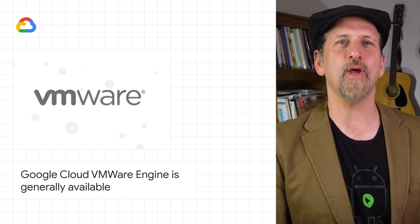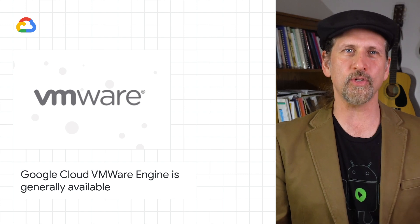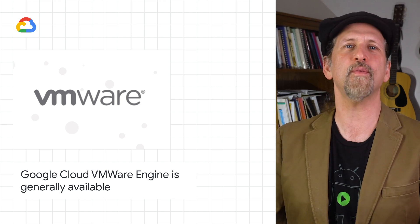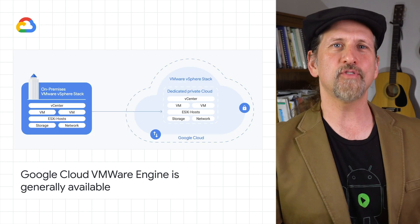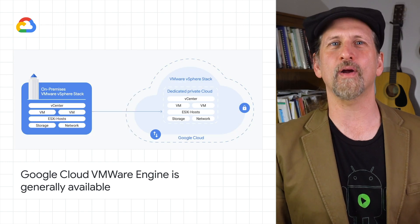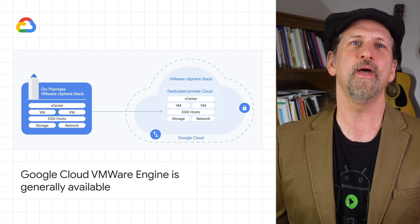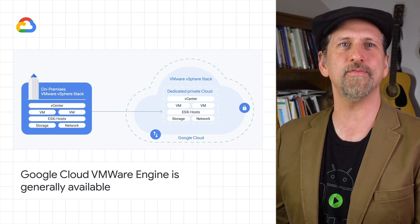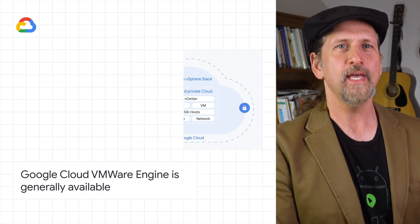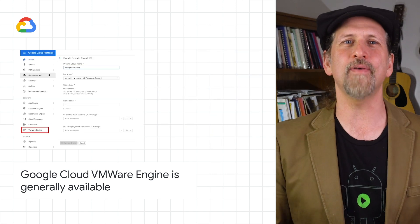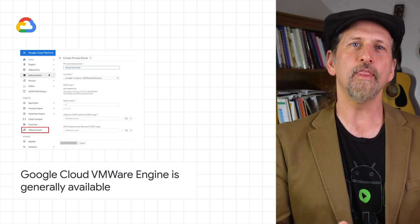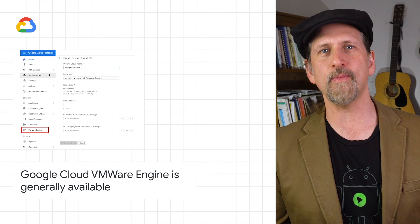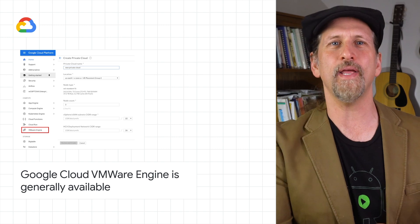Google Cloud VMware Engine is now generally available, enabling you to seamlessly migrate your existing VMware-based applications to Google Cloud without refactoring or rewriting them. The service delivers a fully-managed VMware cloud foundation hybrid cloud platform, including VMware technologies vSphere, vCenter, vSAN, NSX-T, and HCX in a dedicated environment on Google Cloud's infrastructure. The post has more details, as well as information about the Cloud Next '20 on-air session.